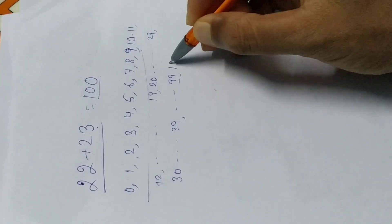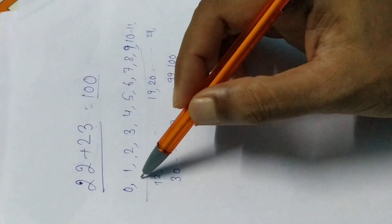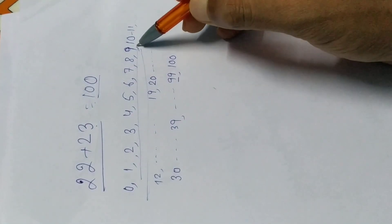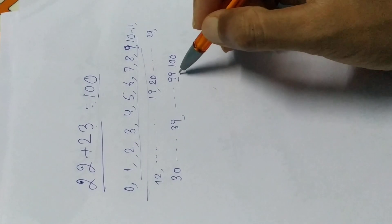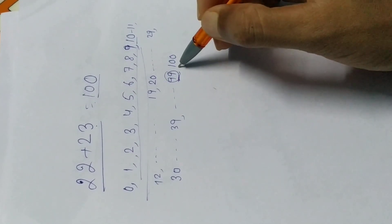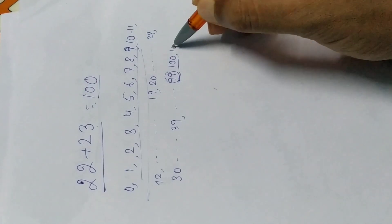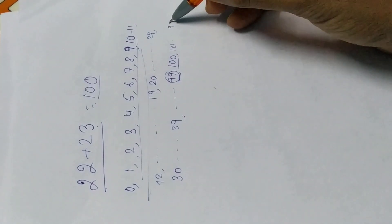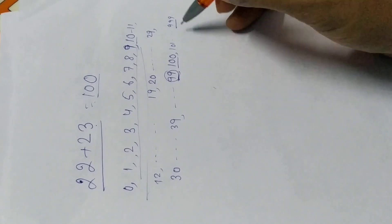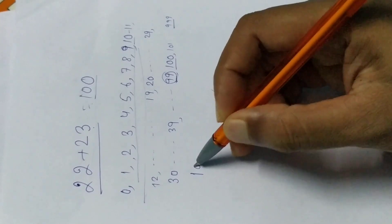Now we can have 9 to 1 — you cannot do that one. Then when we go from 9 to 9, we can have 3, then 2, 2, 3, and then 1 to 9. So if we go past 9, 1, the next number is 100.